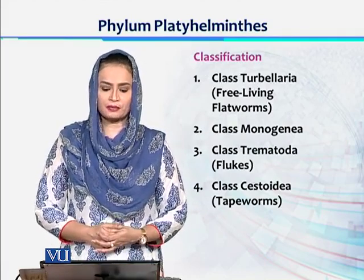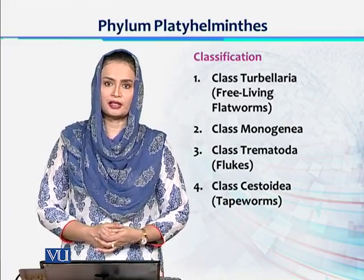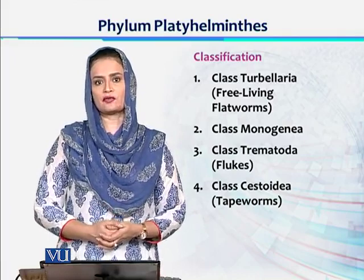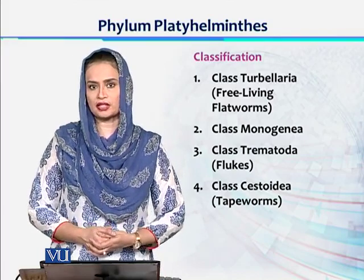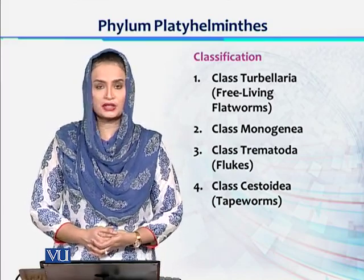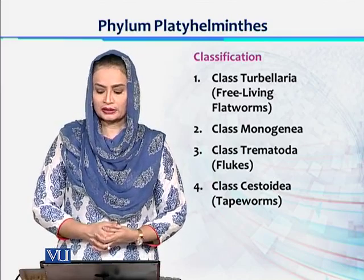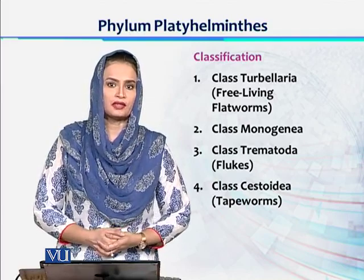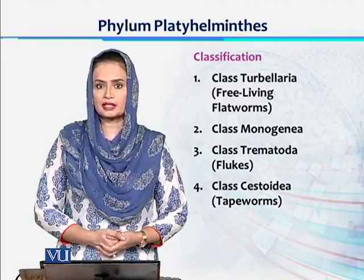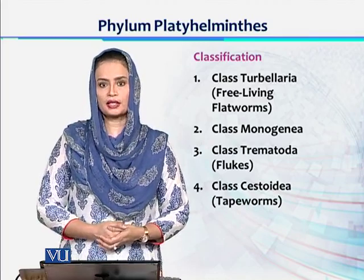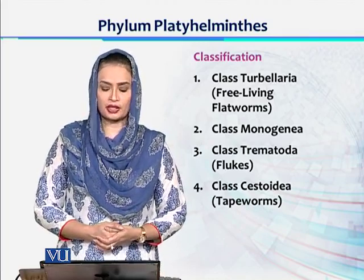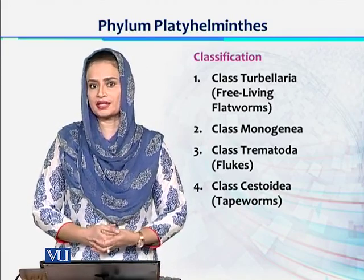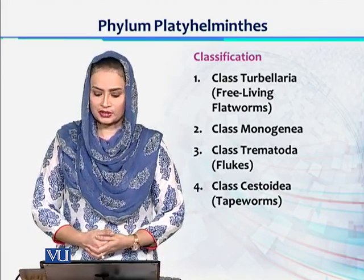In terms of classification, Phylum Platyhelminthes can be divided into four different classes. Class Turbellaria includes all free-living organisms called flatworms. The next class is Class Monogenea. Third is Class Trematoda, which we collectively call flukes — one common example is liver flukes. The fourth class is Class Cestoda, and all tapeworms, which are internal parasites, are present in Class Cestoda.